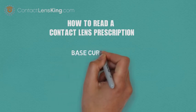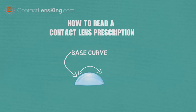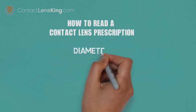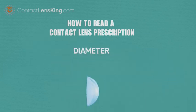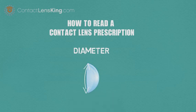Base Curve. The base curve is a measurement that relates to the curvature of the lens. Diameter. The diameter is a measurement that relates to the width of the lens.